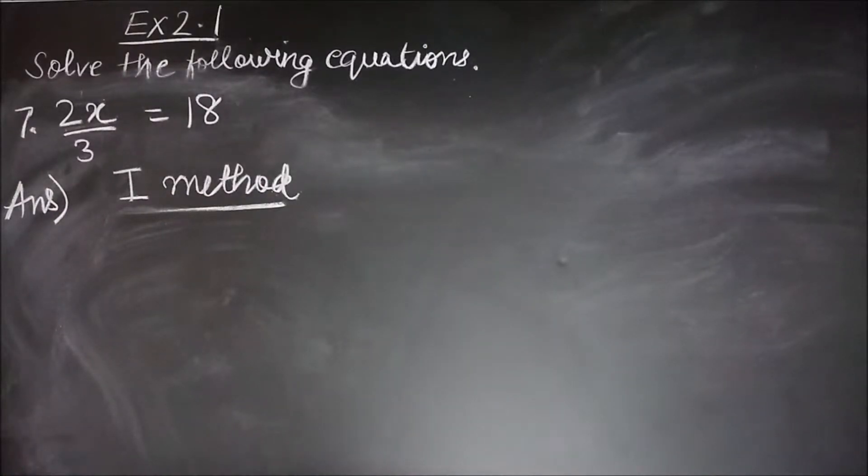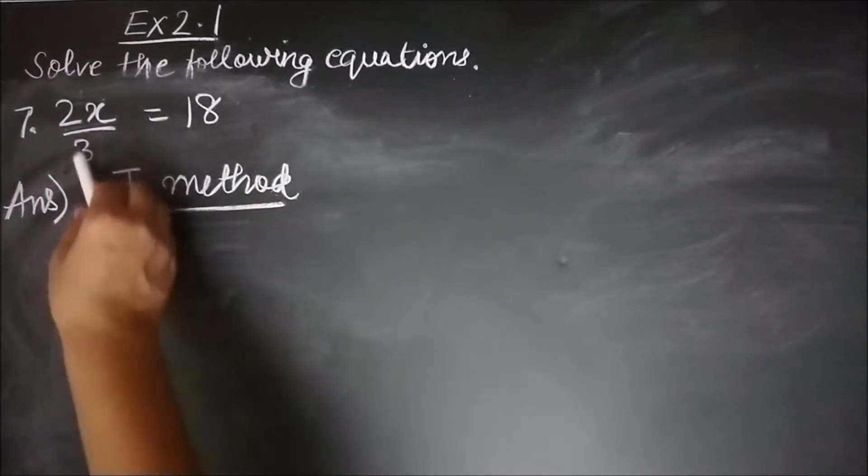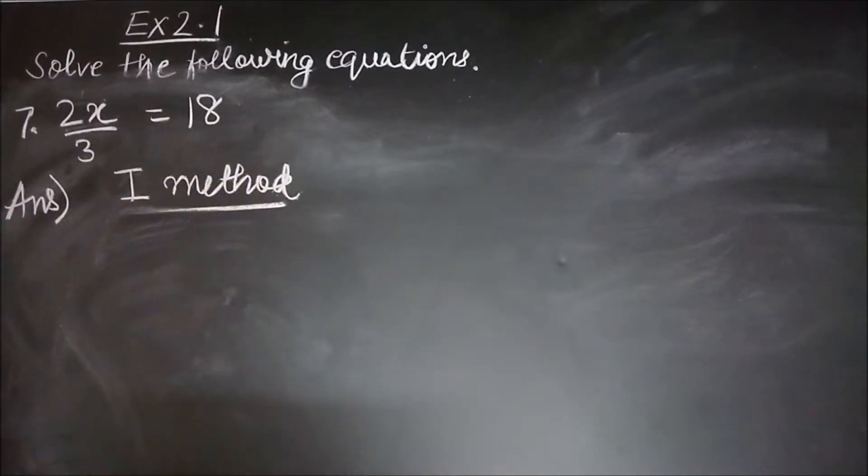Exercise 2.1, question number 7. Solve the following equations. 2 by 3x equal to 18.